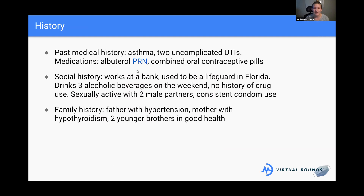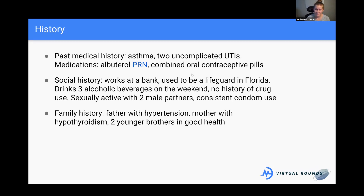For our patient, her past medical history is significant for asthma. She has an albuterol inhaler that she uses PRN — as needed — whenever she has a flare-up. She's also had two uncomplicated UTIs that resolved with antibiotics, and her other medication is a combined oral contraceptive pill for birth control. Socially, she works at a bank, used to be a lifeguard in Florida spending a lot of time in the sun, drinks about three alcoholic beverages on weekends, has no history of drug use, and is sexually active with two male partners using condoms consistently.